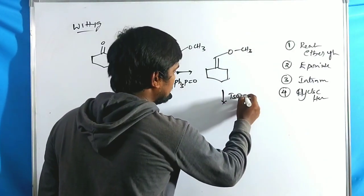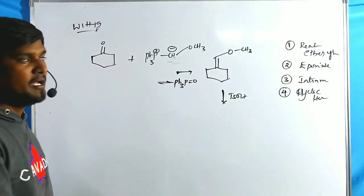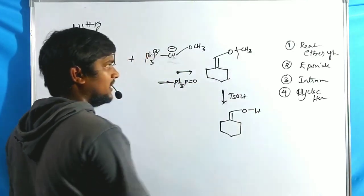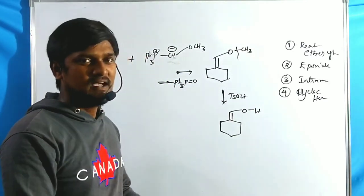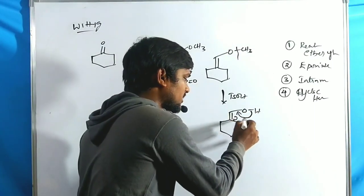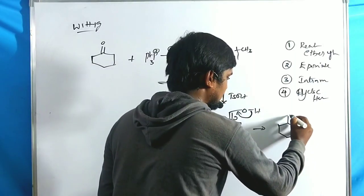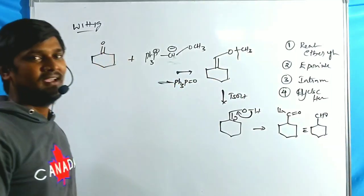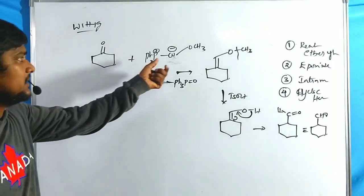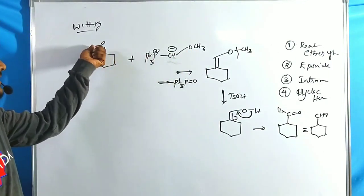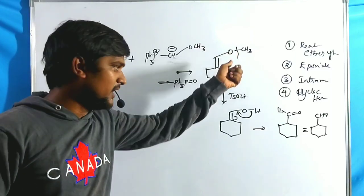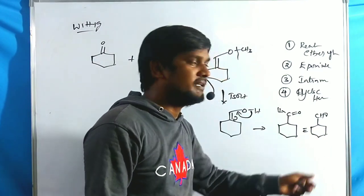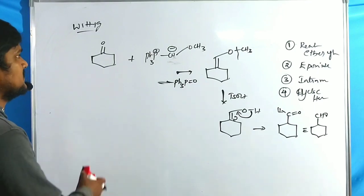The vinyl ethers formed can be treated with mild acidic reagents such as p-toluenesulfonic acid. Hydrolysis takes place to give an enol with an OH group. Since enols are unstable, keto-enol tautomerism occurs, and we get an aldehyde (CHO). So ether-containing ylides treated with ketones or aldehydes give vinyl ethers, which upon hydrolysis in the presence of mild acid give aldehydes.